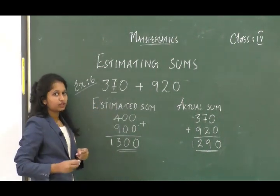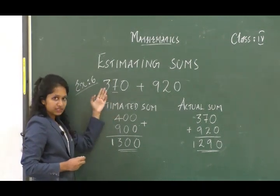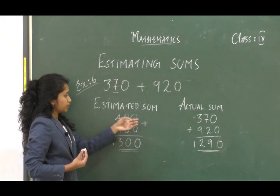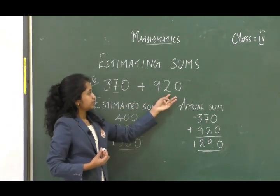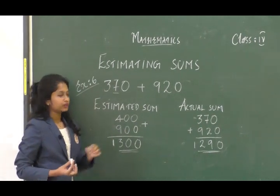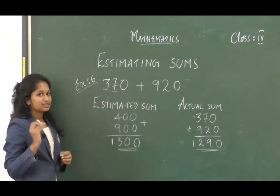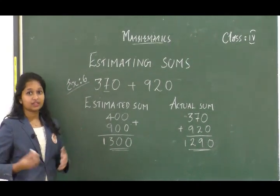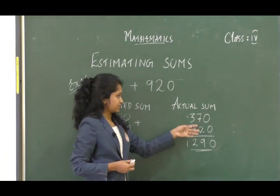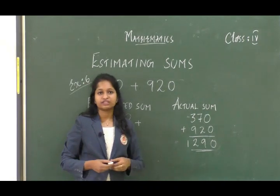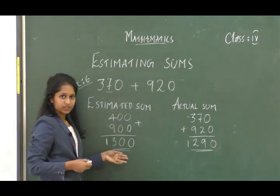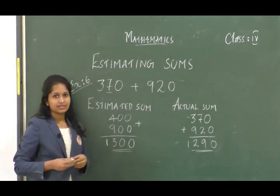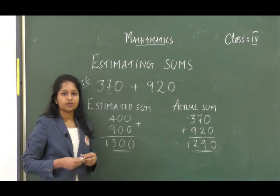The tens digit of 370 is 7, which is greater than or equal to 5, so we round up the hundreds digit from 3 to 4, giving 400. For 920, the tens digit is 2, which is less than 5, so the hundreds digit 9 remains the same — giving 900. So 400 plus 900 gives an estimated sum of 1300. The actual sum of 370 plus 920 is 1290. The estimated value 1300 and actual value 1290 are almost the same — that is what estimating sums means.